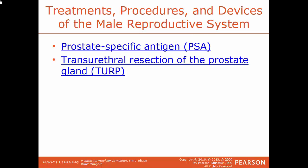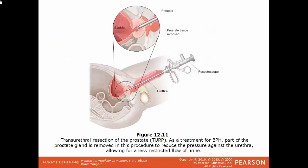TURP, transurethral resection of the prostate gland, is a procedure done to relieve moderate to severe urinary symptoms caused by an enlarged prostate. What you're really doing is removing a section of the prostate gland — done as a way to treat benign prostatic hyperplasia. If there's less prostatic tissue there, there's less chance for swelling, which reduces the pressure against the urethra and leads to increased urine flow.